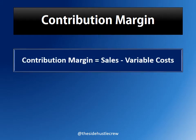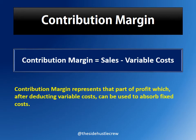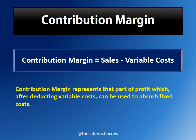Contribution margin is the figure arrived at by subtracting variable costs from the sales revenue. Essentially there are two types of costs that a business has to incur, namely fixed cost and variable cost. Contribution margin represents that part of the profit which, after deducting variable cost, can be used to absorb fixed cost.